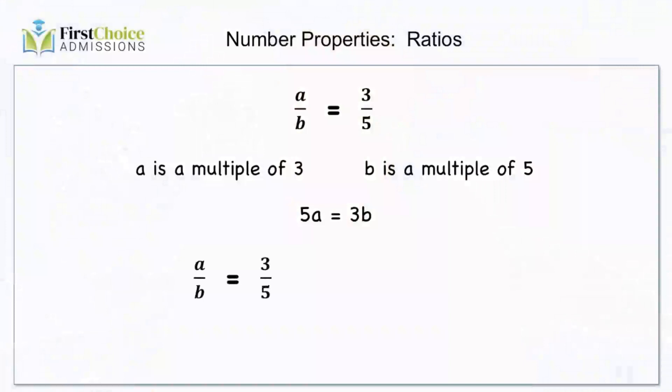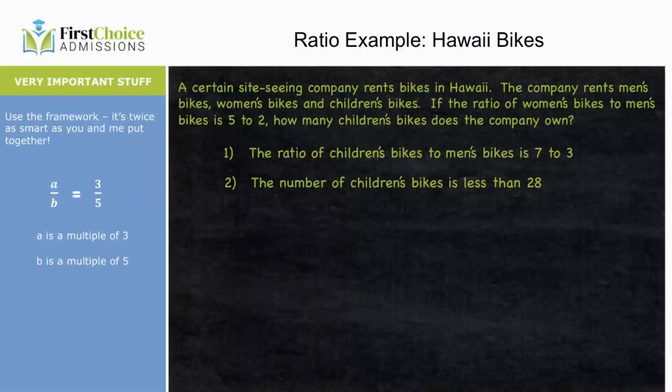The other way we can get there is to use what you learned in fourth grade: you can manipulate ratios as long as you multiply the top and bottom by the same thing. So if a over b is 3 over 5, that ratio is the same as 6 over 10 or 15 over 25, and so on. This pretty obvious insight is incredibly powerful on the test.